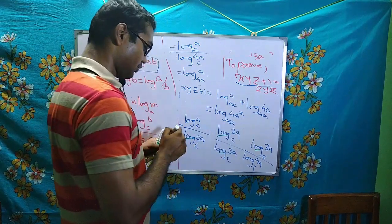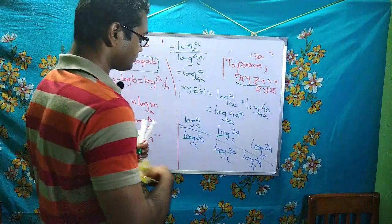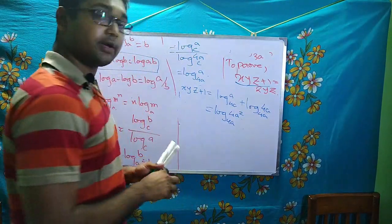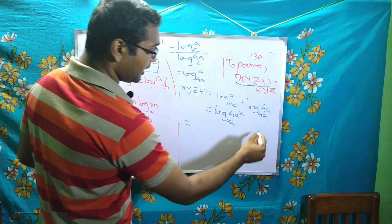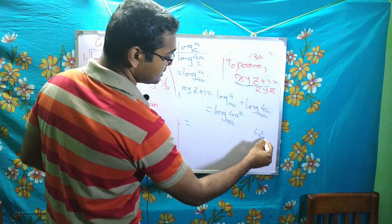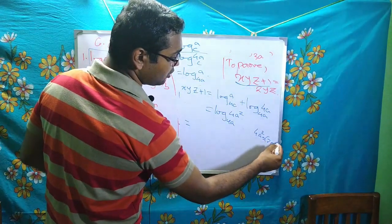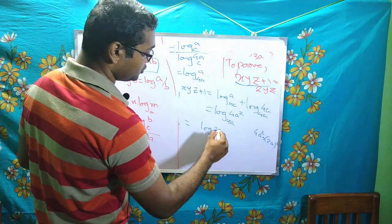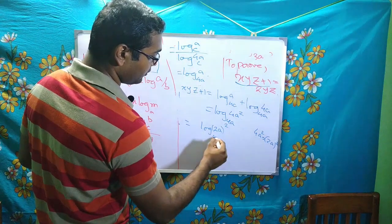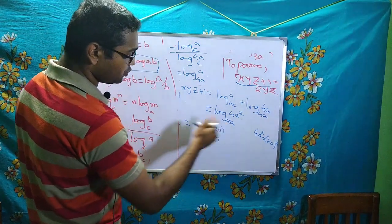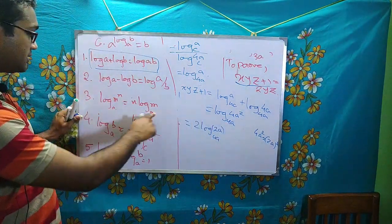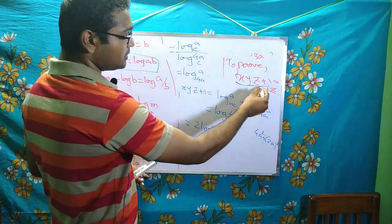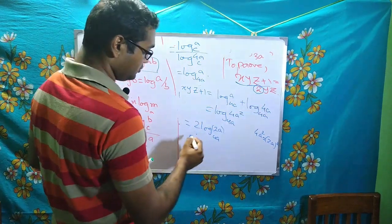Now, 4a squared equals (2a) squared. So log of (2a) squared to base 4a — by the power property, the 2 comes outside, giving 2 times log 2a to base 4a. So yz equals (1/2) times log 2a to base 4a. Therefore 2yz equals log 2a to base 4a. And xyz equals log a to base 4a.